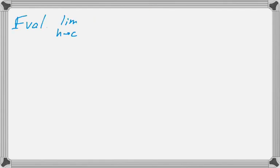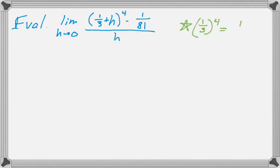So let's evaluate the limit as h approaches 0 of one third plus h to the fourth minus 1 over 81 all over h. And I recognize that one third to the fourth is 1 over 81. f of x in this case is x to the fourth. So when you're doing a multiple choice question, you see some crazy power on a limit, they really don't want you to expand that using like a binomial expansion. They want you to recognize that it's actually probably the derivative.